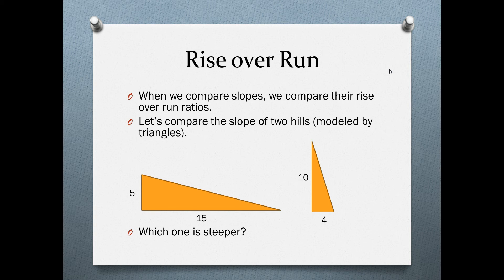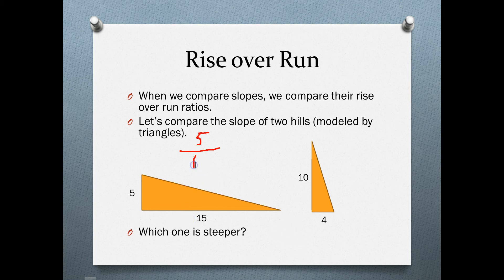When we compare the slopes of two objects, we compare the rise over run ratios. Let's compare the slope of two hills modeled by triangles. Which one is steeper? Starting at the bottom of the first hill, the formula for slope is rise over run. At the top there's a 5-unit increase in height — the rise — and we moved 15 feet horizontally. So the slope is 5 over 15, which equals one third.